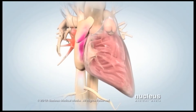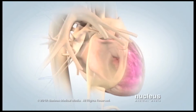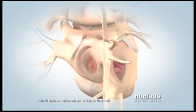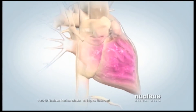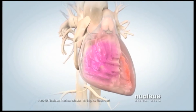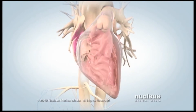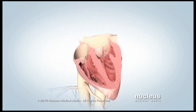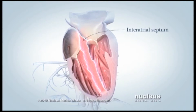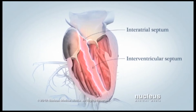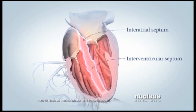During a normal heartbeat, blood from your tissues and lungs flows into your atria, then into your ventricles. Walls inside your heart, called the interatrial and interventricular septa, help keep the blood on the left and right sides from mixing.